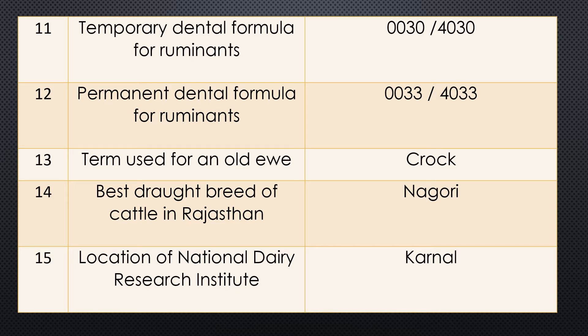Question twelve: Permanent dental formula for ruminants. Upper jaw: 0, 0, 3, 3. Lower jaw: 4, 0, 3, 3.